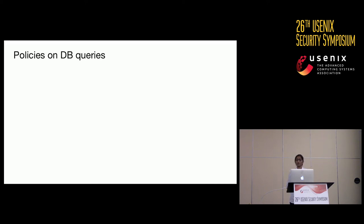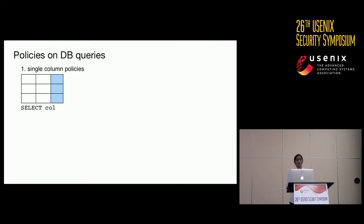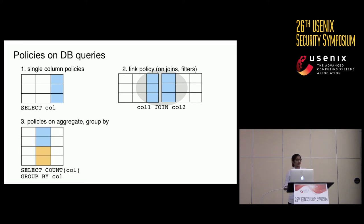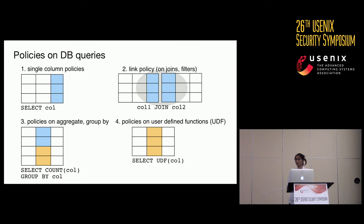I'll start by describing how we specify policies in Kapla's specification framework. In practice, many of the complex policies needed on application queries can be categorized into: policies on queries accessing single columns; policies on queries linking multiple columns through joins or filters; policies on queries performing aggregates with grouping on one or more columns; and policies on queries performing user-defined functions on columns. In the context of HotCrp, I'll give examples from the first three classes of policies.